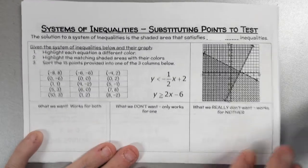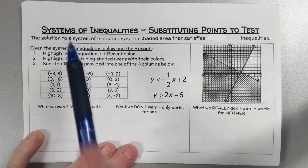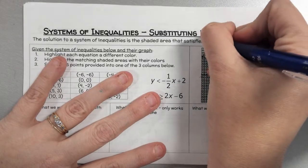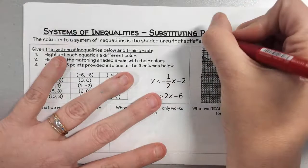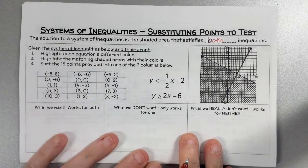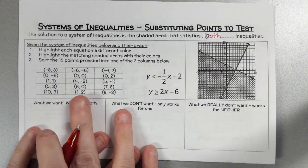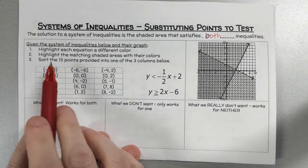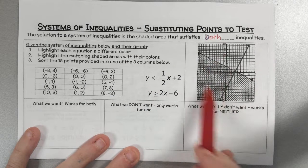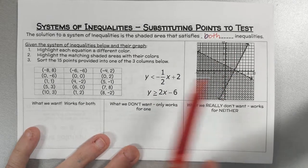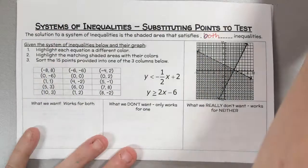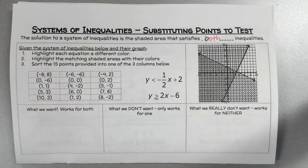With systems of inequalities, the solution is the shaded area that satisfies both inequalities. Here's how this works: when we have a system — and I've given you one that's already been graphed — these are the two equations. We're going to highlight each equation a different color.